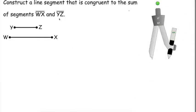So here we have a second task, and it says construct a line segment that is congruent to the sum of segments WX and YZ. So once again, we start by making a starting point.